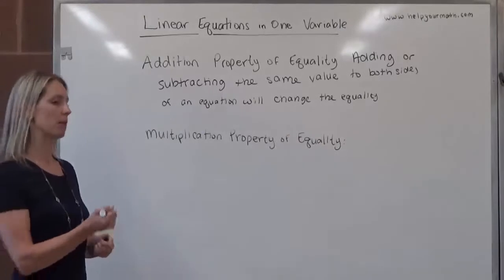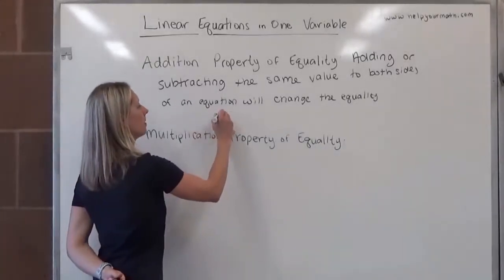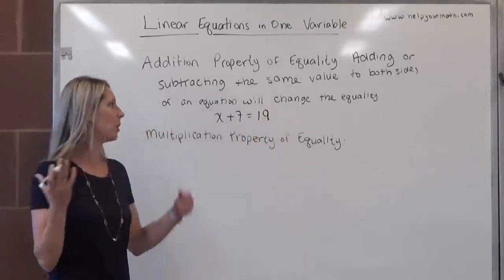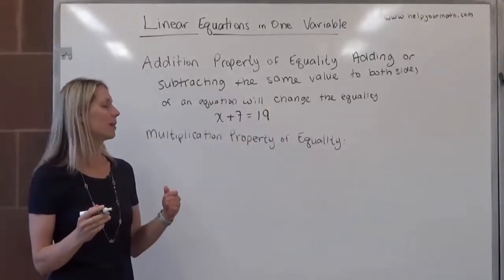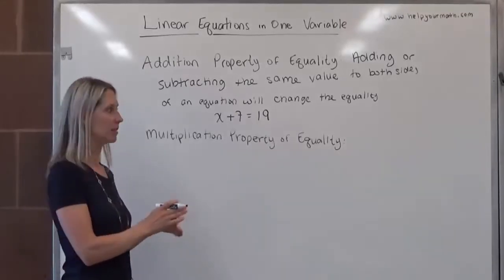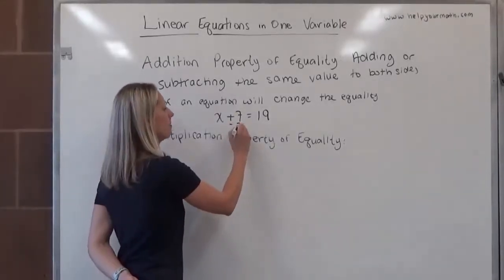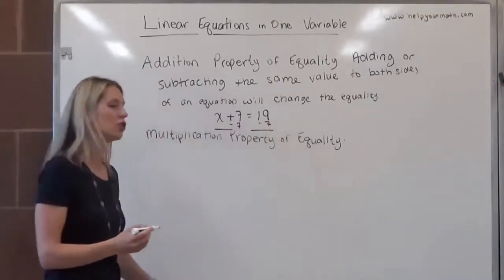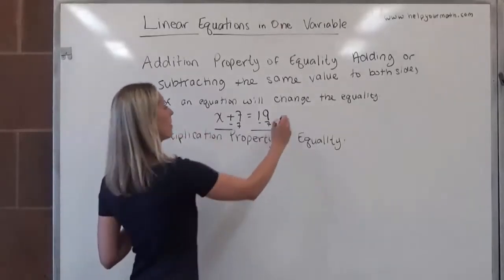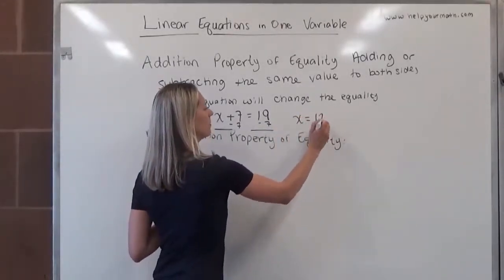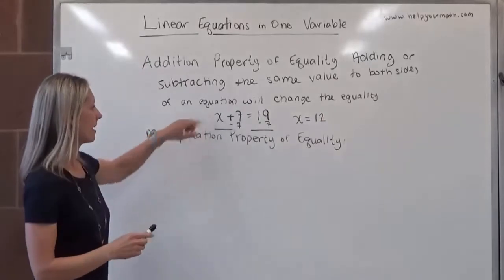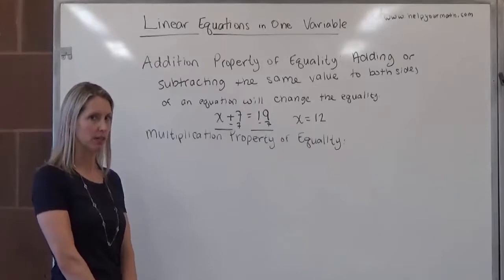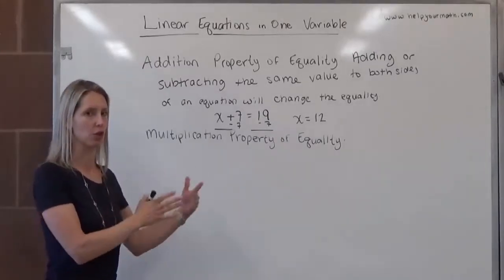So just an example of the addition property of equality. If we have x plus 7 equals 19, and we want to isolate x, we can apply the addition property of equality by either adding negative 7 to both sides or subtracting 7. So I would say minus 7 on the left hand side, minus 7 on the right hand side, and that will not change the equality. So what we would end up with here is x equals 12. And so we say that x plus 7 equals 19 and x equals 12 are equivalent equations, meaning they have the same solution set, they both have a solution of 12.